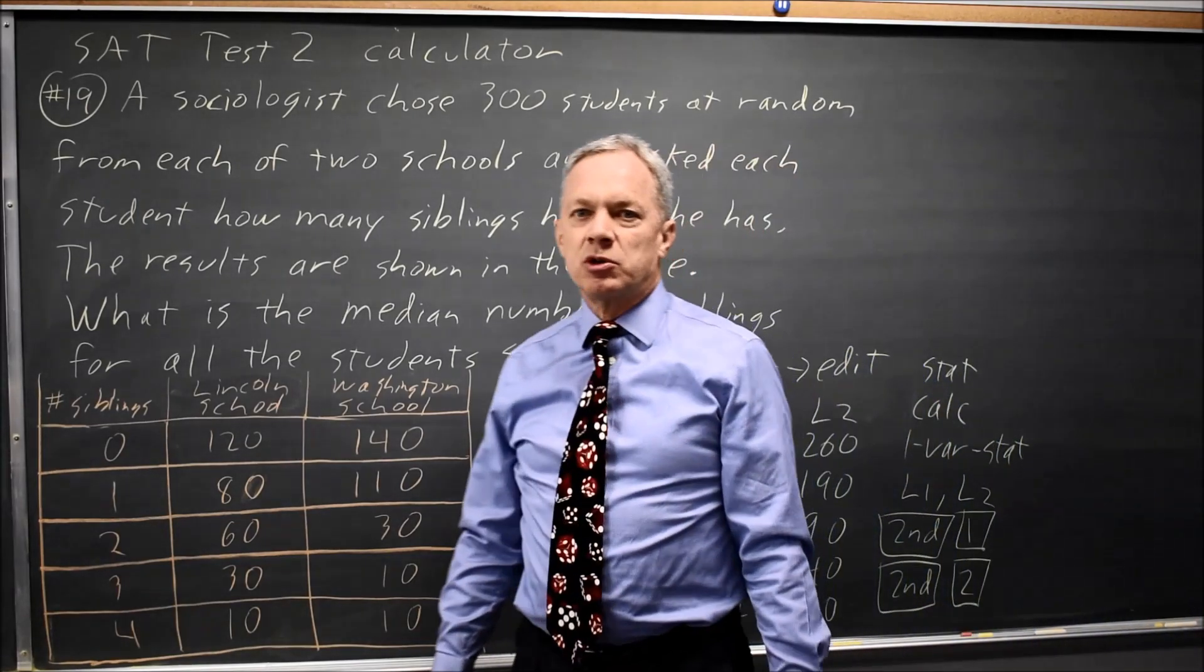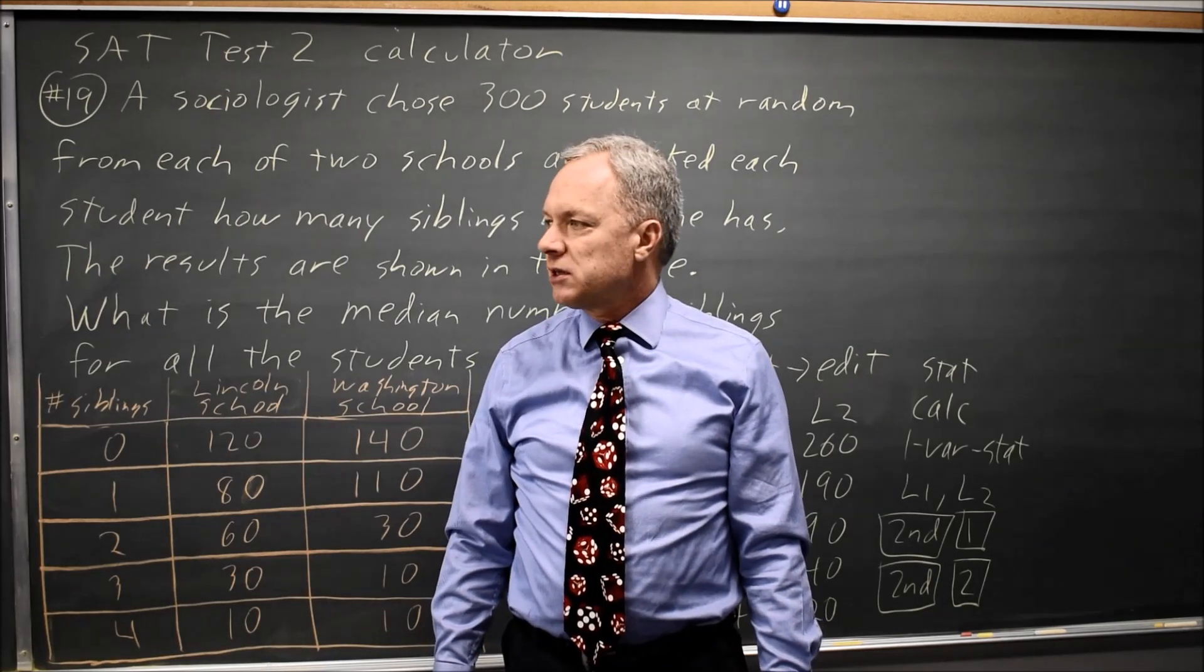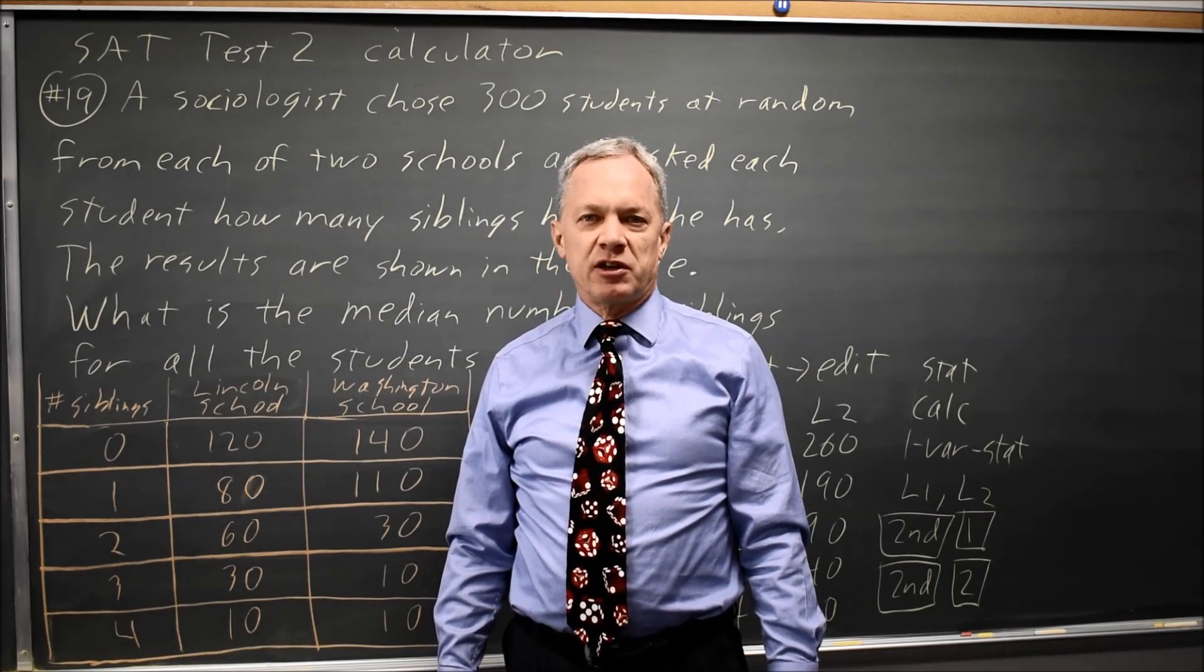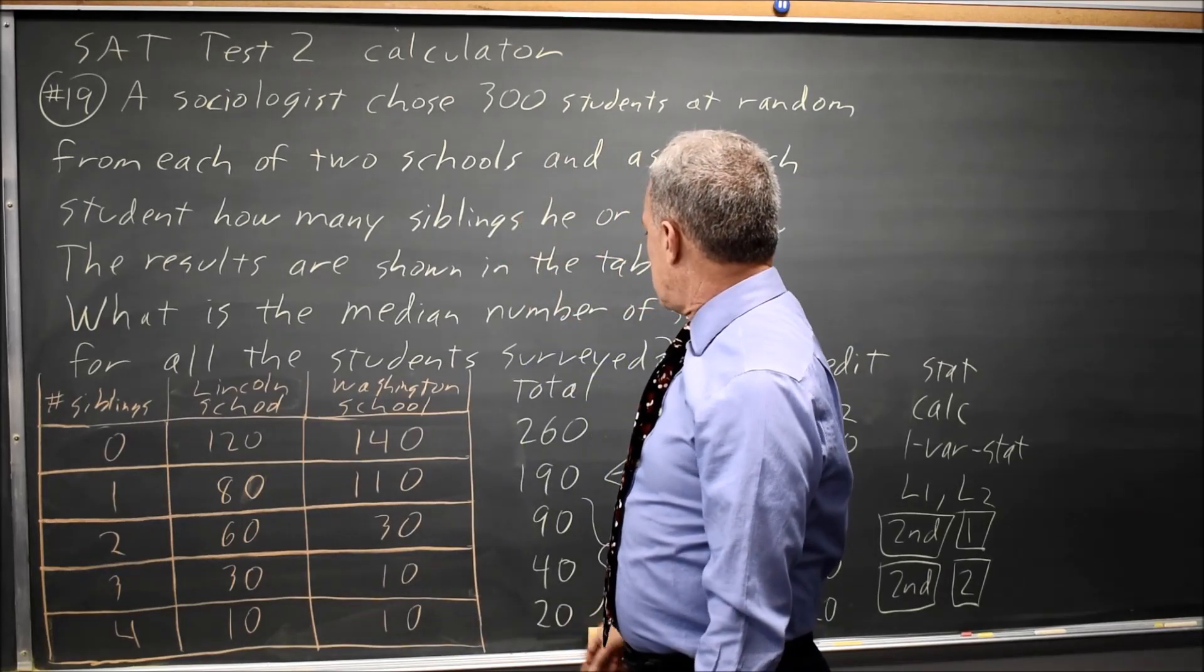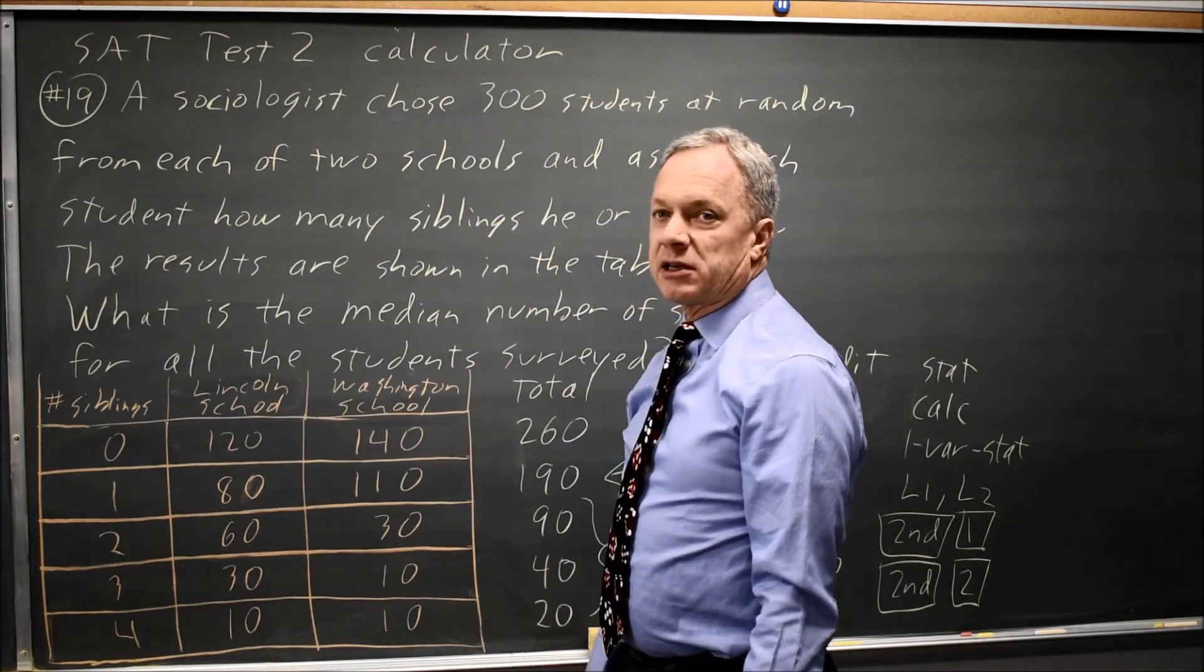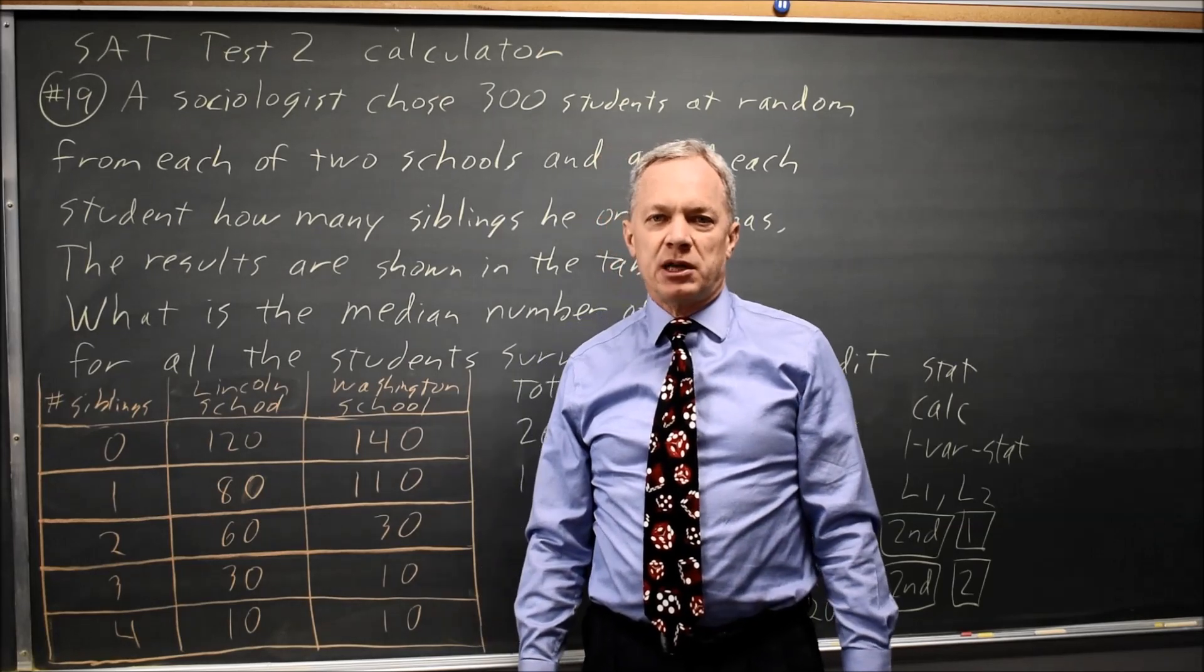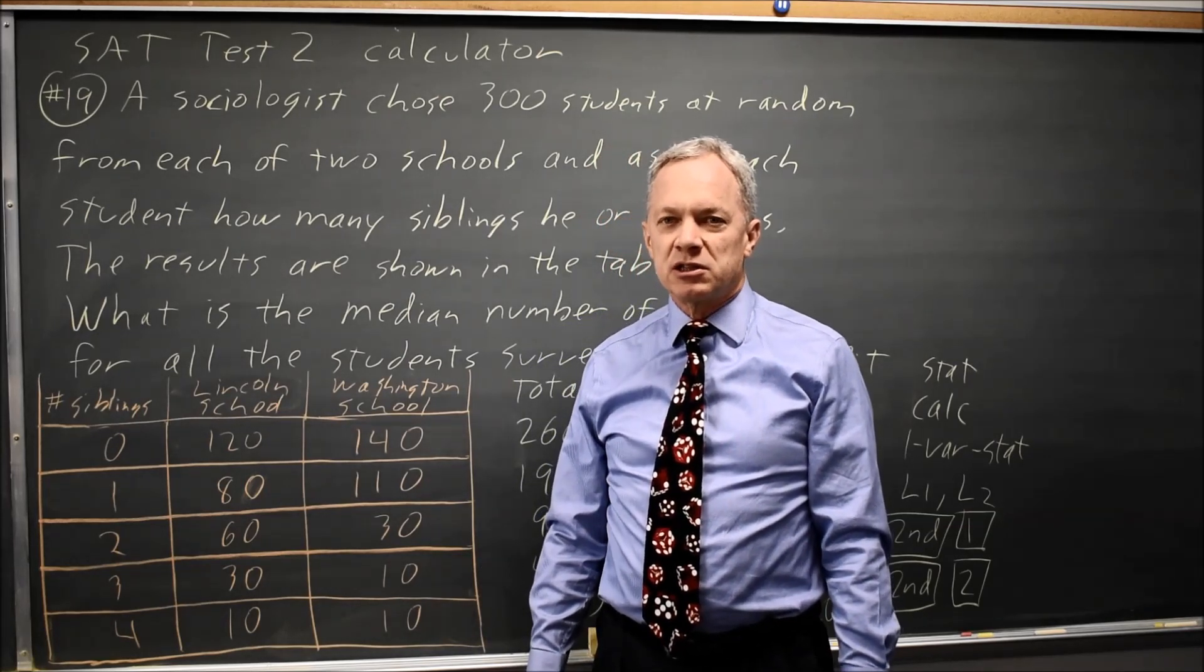Again, College Board often asks for mean or median, and the graphing calculator will give you both. It's almost always a calculator question. Or you can find it by hand if you remember that the median is the middle number when they're in order from smallest to largest.